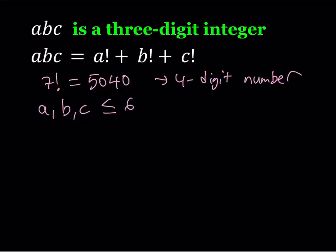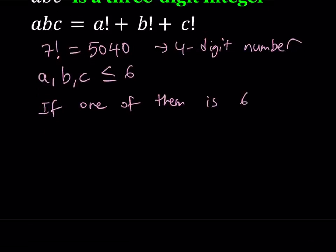Now what happens if one of these digits is a 6? If one of the digits is 6, we know that 6 factorial is equal to 720.